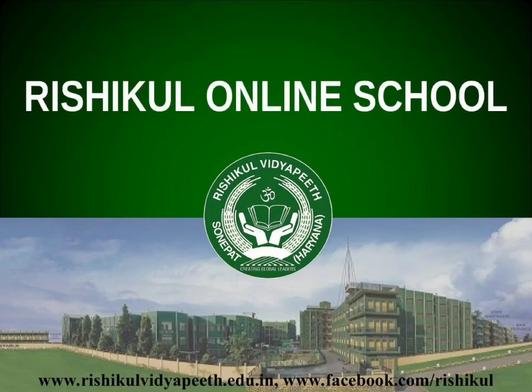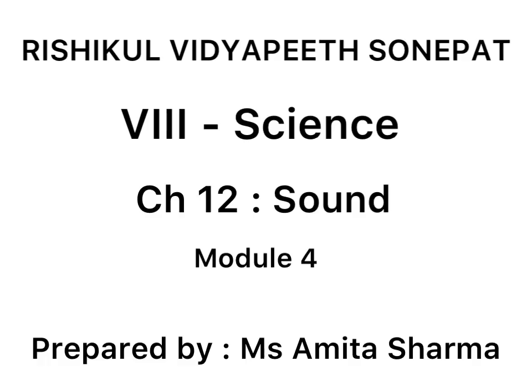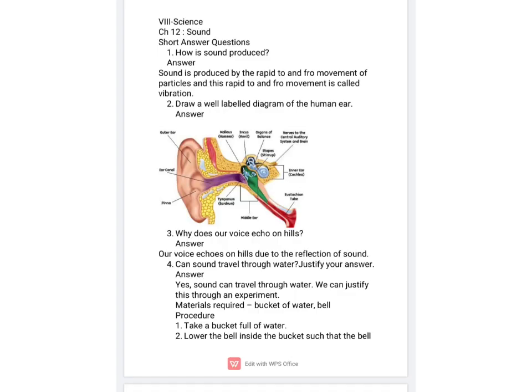Good morning dear students. Today we will discuss the question answers of chapter sound. The first question is: how is sound produced? Sound is produced by vibrations, that is, the to and fro movement of any object or particles.